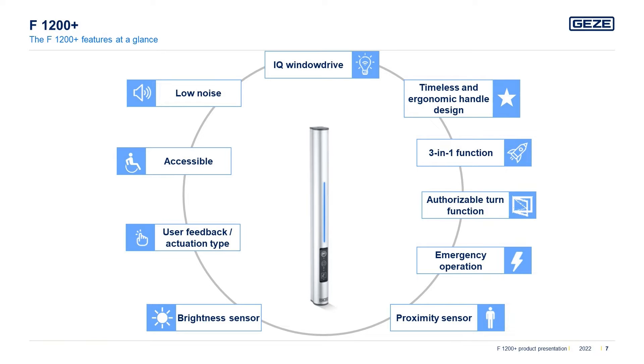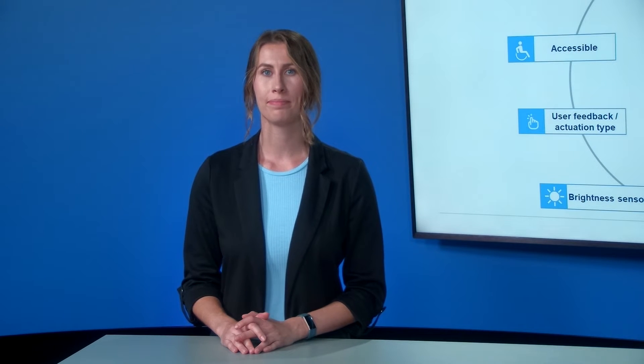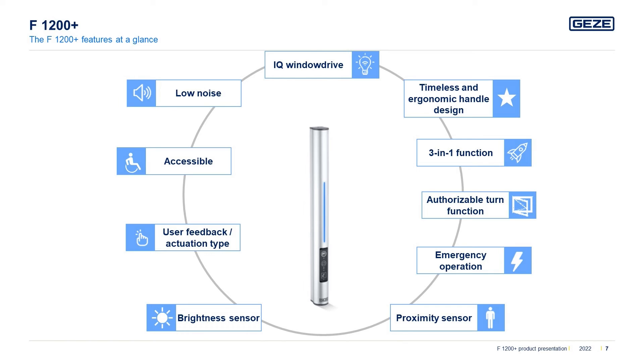Displayed are all the functions and features of the F1200 Plus: the timeless and ergonomic handle design; three functions possible with only one drive; the turn function customizable mechanically or by software; integrated emergency operation; integrated technology such as the brightness sensor and proximity sensor; user feedback on the drive by different types of actuation; it is more accessible; the drive is quiet; and the F1200 Plus belongs to Geze's IQ window drive family.